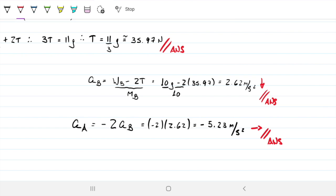So what are the answers? The tension is now 35.97, so approximately 36. The acceleration of A is 5.23 meters per second squared rightwards. The acceleration of B is 2.62 meters per second squared downwards. The acceleration of C is zero, nil. Let me know if you have any questions.